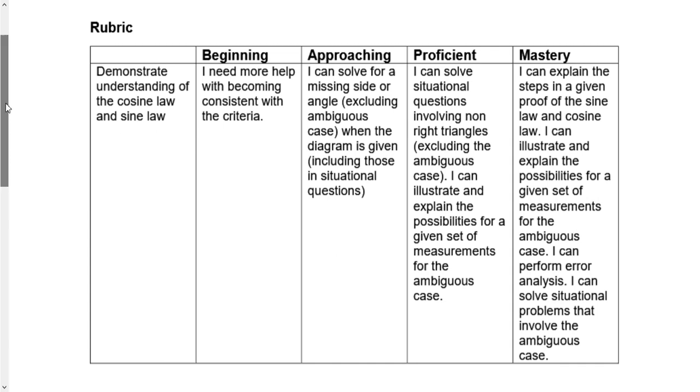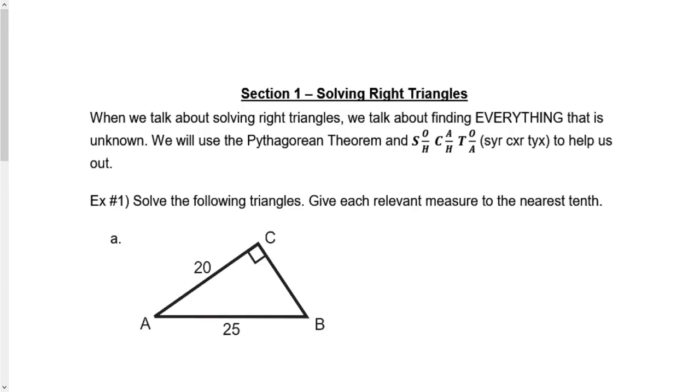Now, we have a nice rubric. I talked about how we can actually achieve mastery of this outcome. I can explain steps, I can illustrate possible examples, I can do my ambiguous case, I can perform an analysis. But before we get to our sine and cosine law, we are absolutely going to go back to just our right triangles. We are going to go back to using the Pythagorean theorem and our sine, cosine, and tangent ratios.